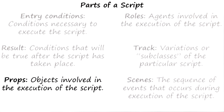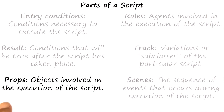The third part of a script is called props. Props are the kind of objects that are involved in the execution of the script. So in the case of the restaurant script, the props might include tables and menus and food items and so on.